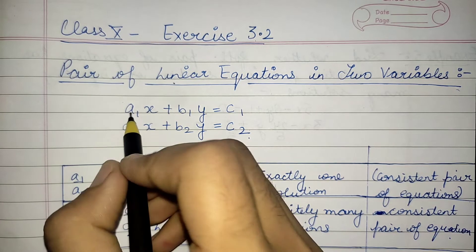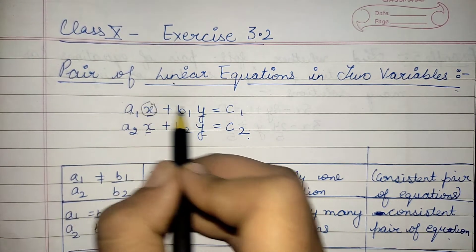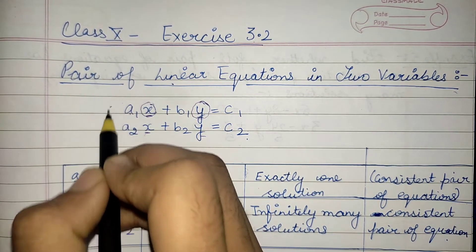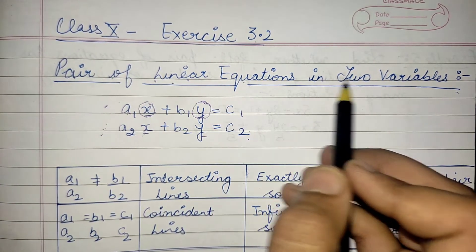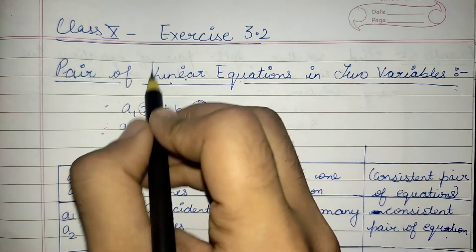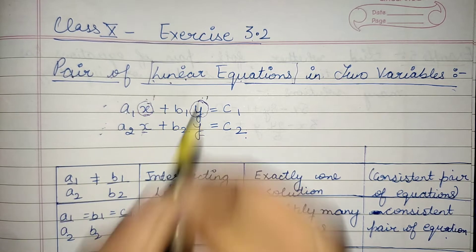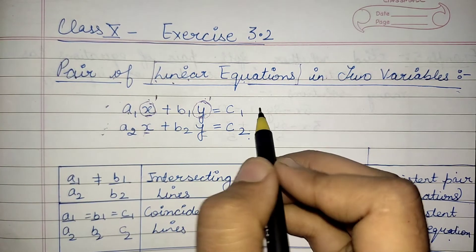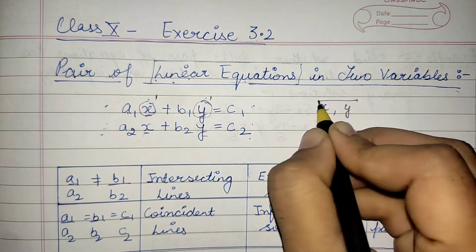If linear equations are given in two variables — the first variable is x and the second is y — then 'pair' refers to the two equations given together. 'Linear equations' means the power of the variables is one. We need to understand how to find the solution of these two equations, meaning how to find the values of x and y.